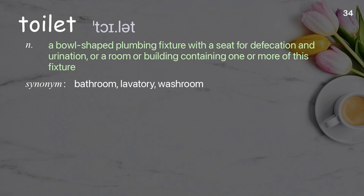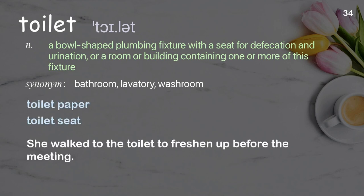Toilet: a bowl-shaped plumbing fixture with a seat for defecation and urination, or a room or building containing one or more of this fixture. Examples: toilet paper; toilet seat; she walked to the toilet to freshen up before the meeting.